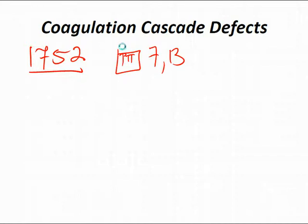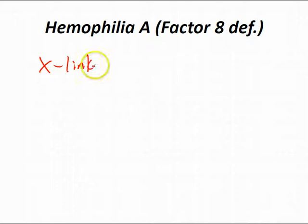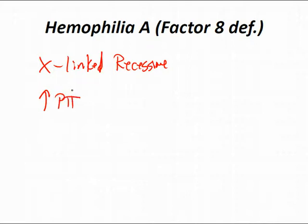Hemophilia A is a factor 8 deficiency — X-linked recessive with variability of severity. You'll see an increased PTT, but all other labs are normal: normal bleeding time, normal PT. Factor 9 deficiency is hemophilia B — signs and symptoms are identical to hemophilia A, including isolated PTT prolongation. Hemophilia B is also X-linked recessive.